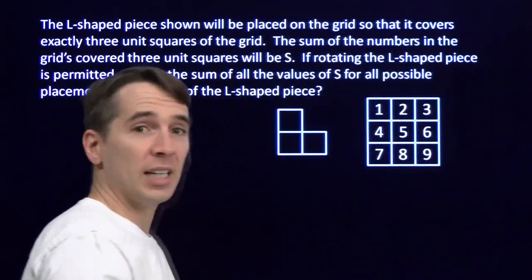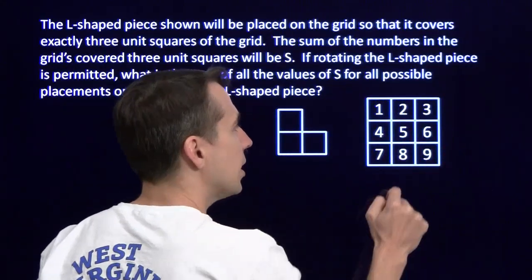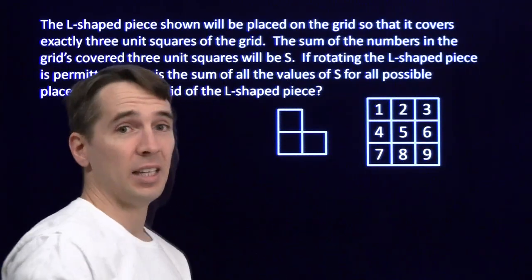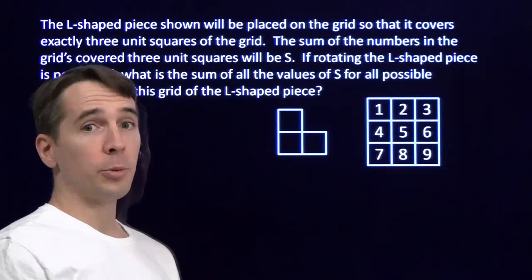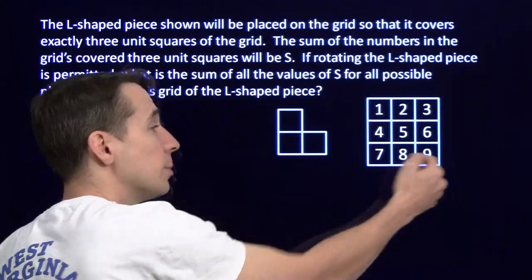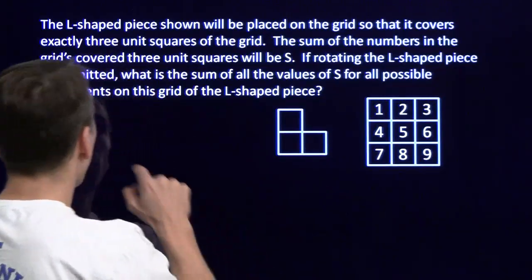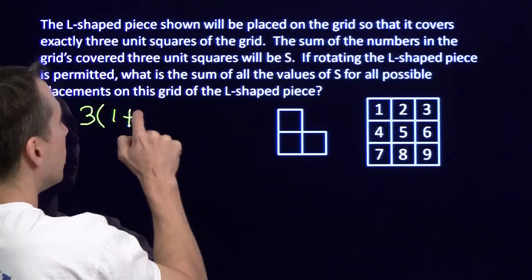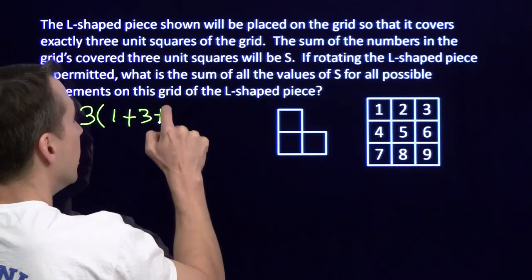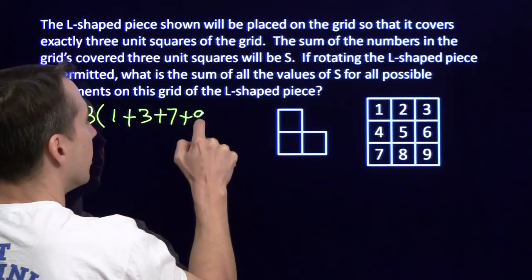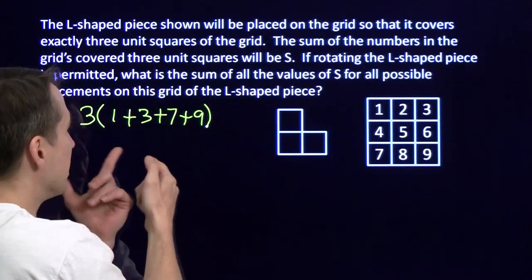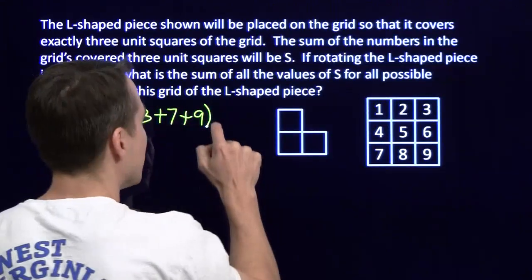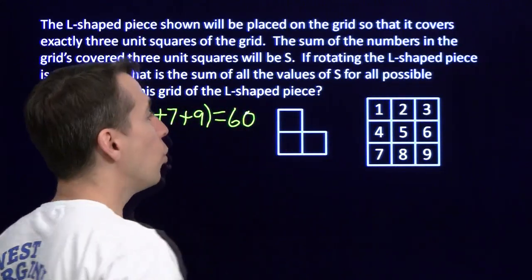Similarly, there are three different ways to get the 3 into the sum: 2, 3, 6, or 5, 2, 3, or 5, 6, 3, and so on for each of the corners, for the 7 and the 9. So the 1 is going to show up three times, the 3 is going to show up three times, the 7 is going to show up three times, and so is the 9. So we know when we add up all these S's, we're going to have three times the 1, the 3, the 7, and the 9. Adding this is easy. 1 and 9 is 10, 3 and 7 is 10, this whole sum is 20, 3 times 20 is 60. So we've taken care of the corners.